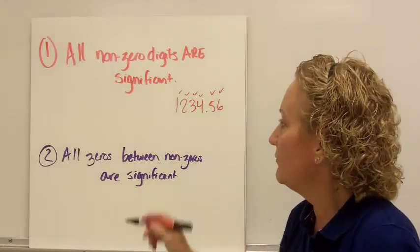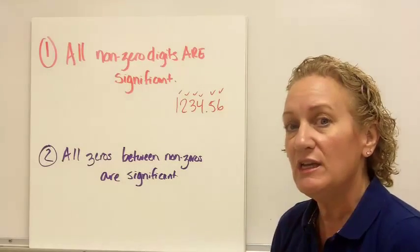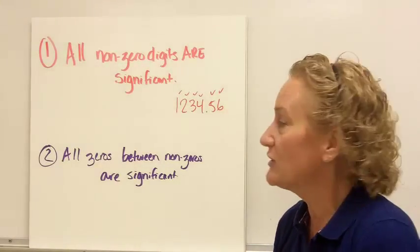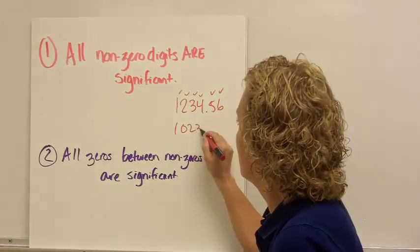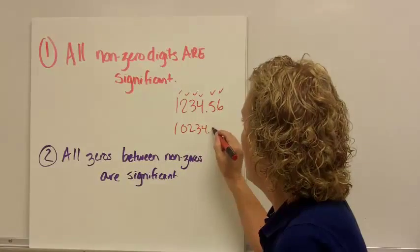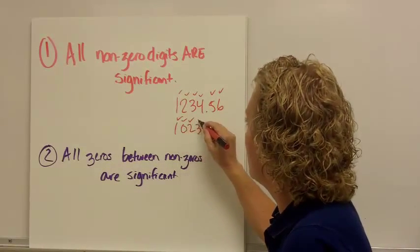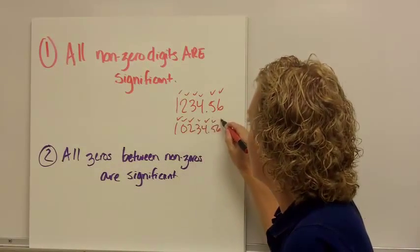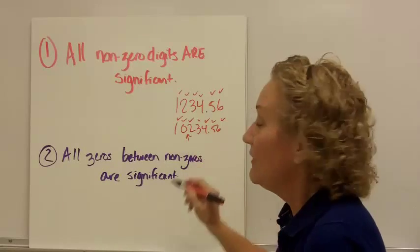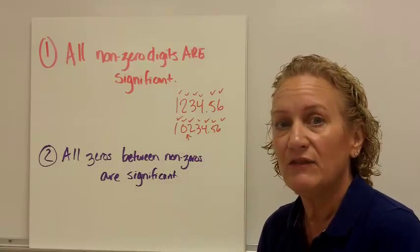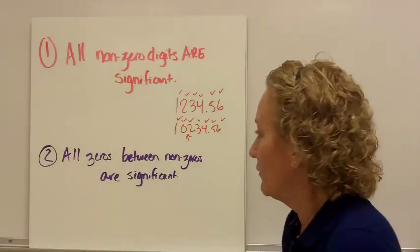The second rule is also pretty easy: all zeros between non-zeros are significant. So, if I had 10234.56, I would have 7 significant figures. That zero is significant because it's between non-zeros.